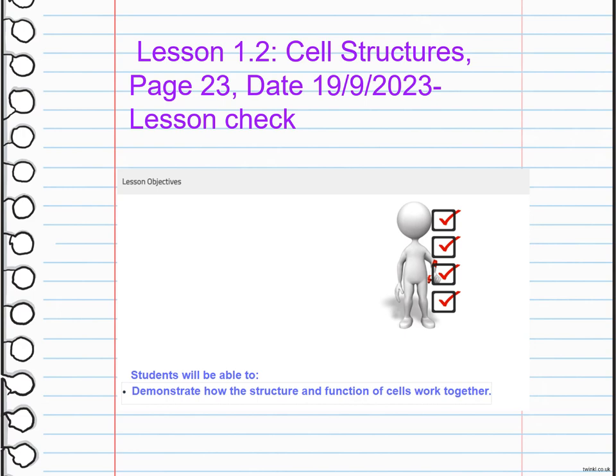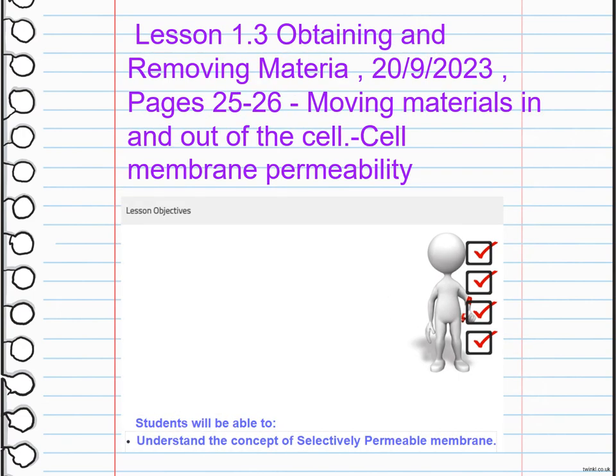We are also going to talk about moving materials in and out of the cell and cell membrane permeability. The concept of selectively permeable refers to the property of a cell membrane that allows certain substances to pass through while restricting others — acting like a gatekeeper controlling the movement of molecules in and out of the cell.